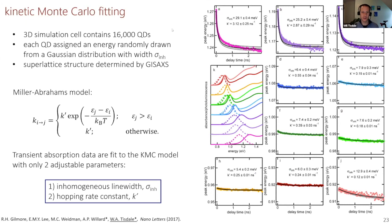We started fitting this type of transient redshift data to kinetic Monte Carlo models. The details are here. We're using the simplest hopping model, just a Miller-Abrahams model, and there's only two fitting parameters, the inhomogeneous line width, or the site energy disorder in the system, and the hopping rate constant k prime, the attempt frequency. You can see over here on the right, this is an example of the quality of fits for various different size batches of nanocrystals with differing polydispersity.